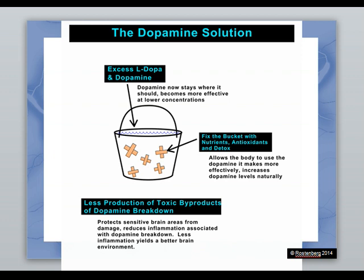Now we look at the dopamine solution. Dopamine should stay where it is supposed to be, and is more effective at lower concentrations when it's not constantly spilling out. If you have holes in the bucket, you have to constantly pour dopamine in to maintain the right level. With the bucket fixed, you hardly need to add any at all. We fix the bucket with nutrients, nutrition from plants, antioxidants, and proper detox strategies — allowing the body to use the dopamine it makes much more effectively.